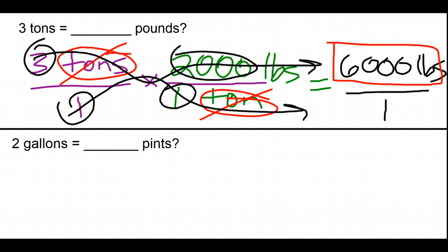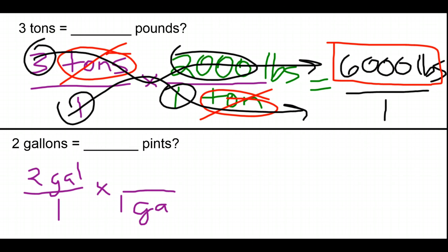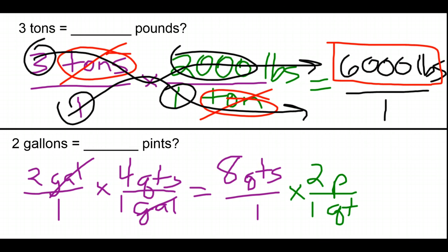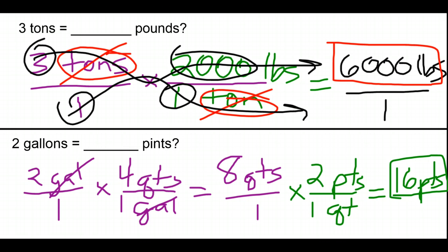Now let's look at 2 gallons to pints. We start with 2 gallons. There's not a direct conversion from gallons to pints unless we know there are 8 pints in a gallon. But if we didn't know that, we'd know that 1 gallon is the same as 4 quarts. The gallons cancel, giving us 8 quarts over 1. Then we use a second conversion fraction — a quart is the same as 2 pints — and end up with 16 pints in 2 gallons.